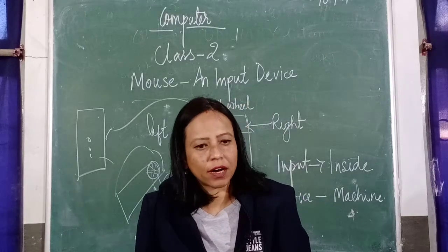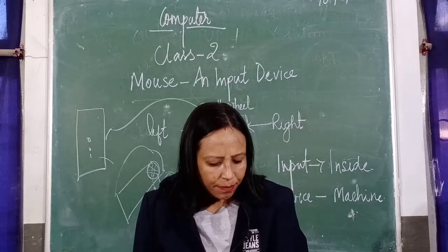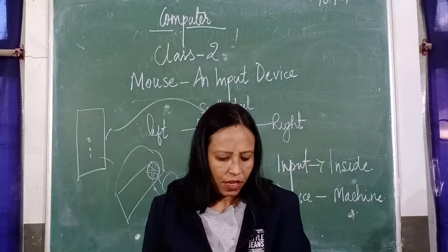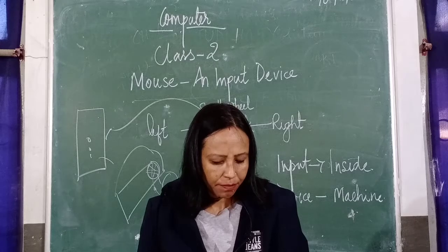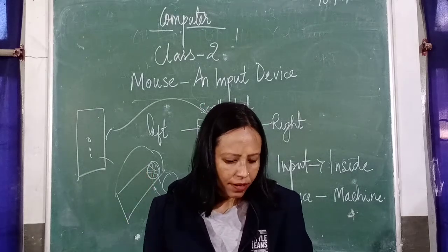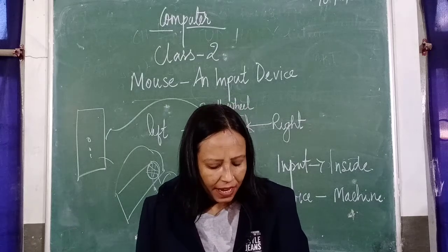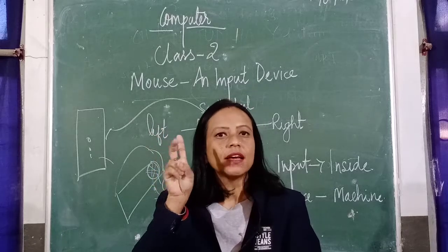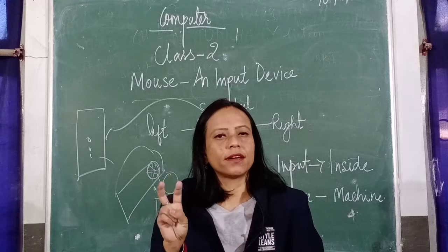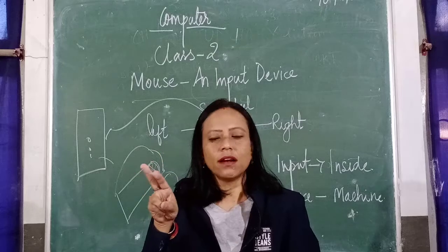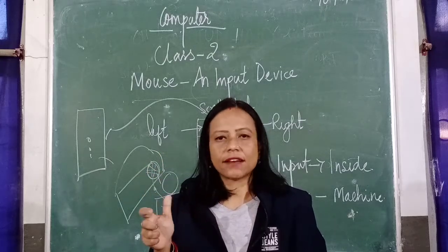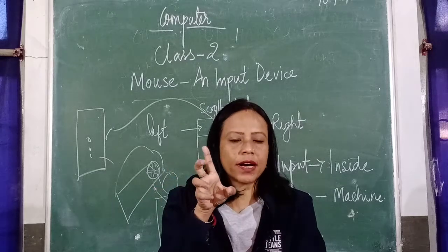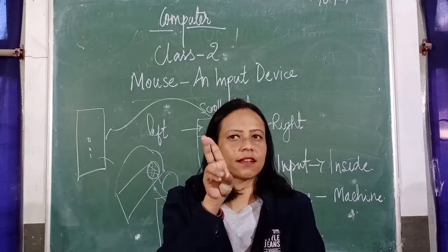Now let us quickly recap how to hold a mouse with the right hand. Place the index finger on the left button and use it to scroll the wheel as well. Place the middle finger on the right button. Hold the left side of the mouse with the thumb, and the ring finger and little finger on the right side. Your index and middle fingers press the two buttons, while the thumb, ring finger, and little finger help you grip the mouse.